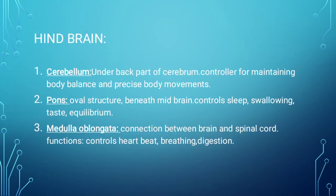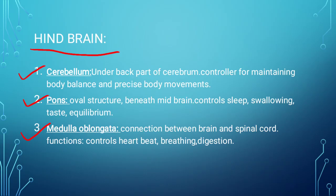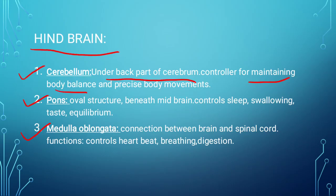Next we have the last part of the brain, which is called the hindbrain. The hindbrain has three further parts: cerebellum, pons, and medulla oblongata. The cerebellum has a similar name to the cerebrum from the forebrain, but it is a different part. The location of the cerebellum is under the back part of the cerebrum. It maintains our body balance and controls precise body movement.